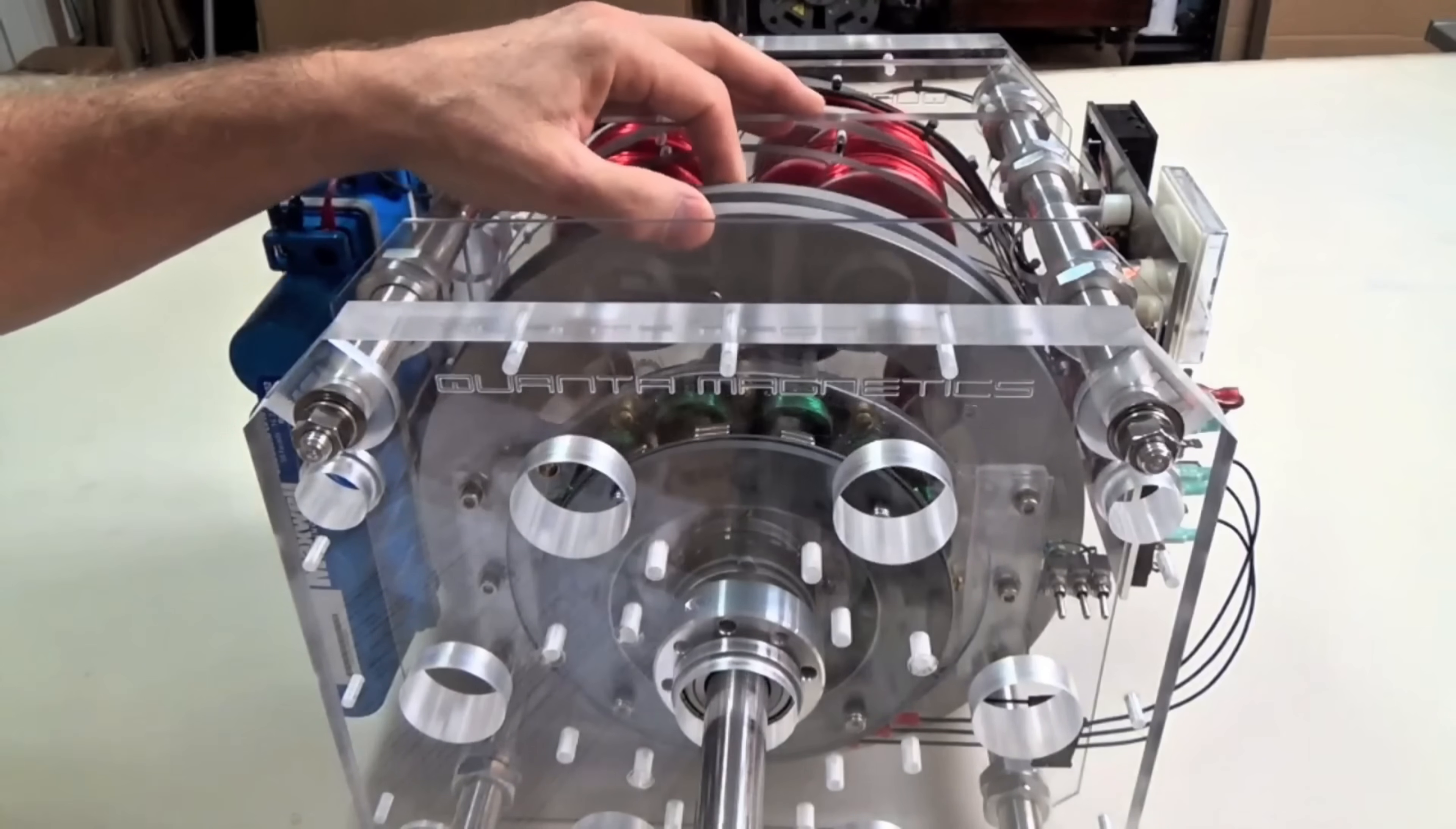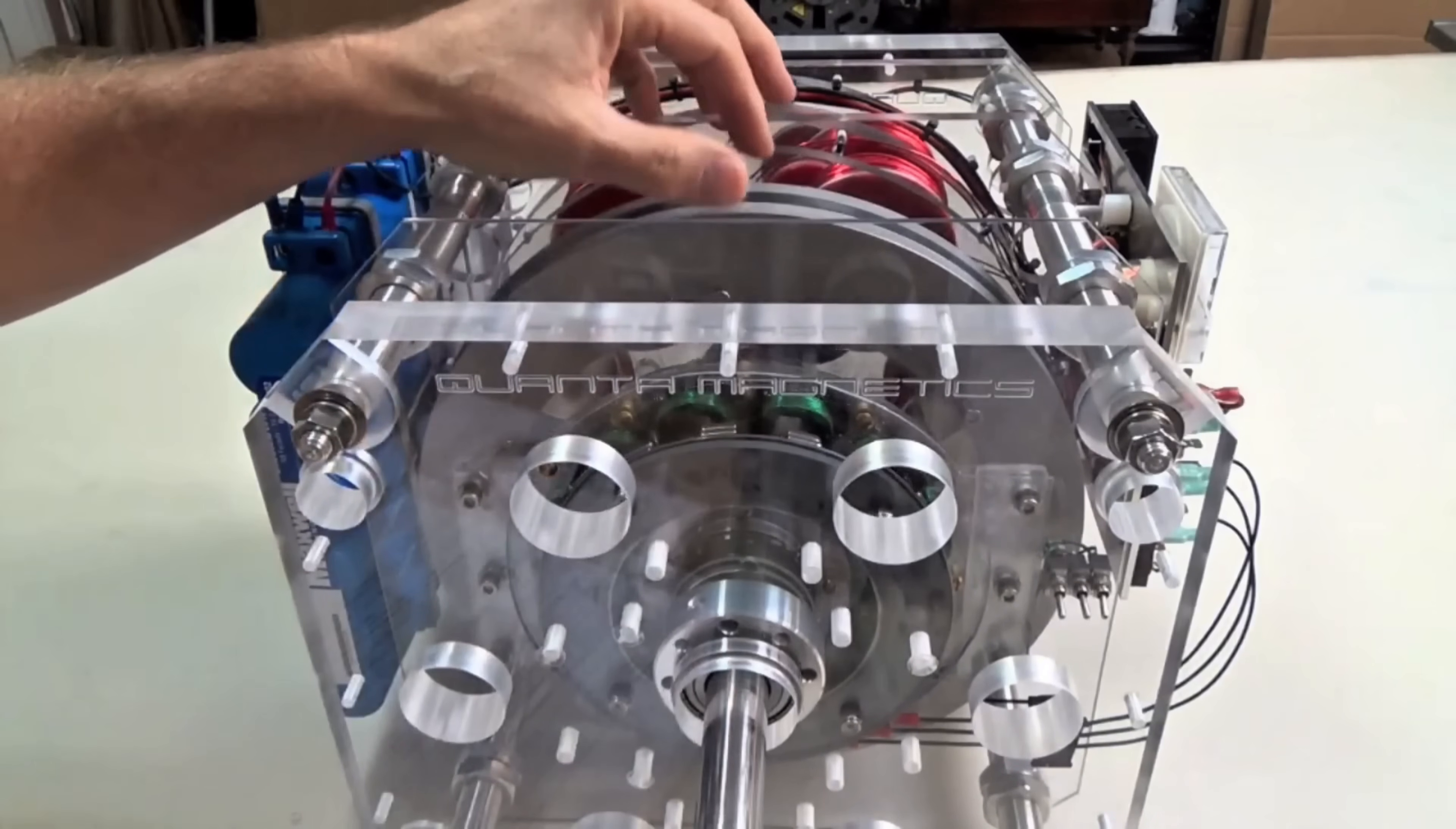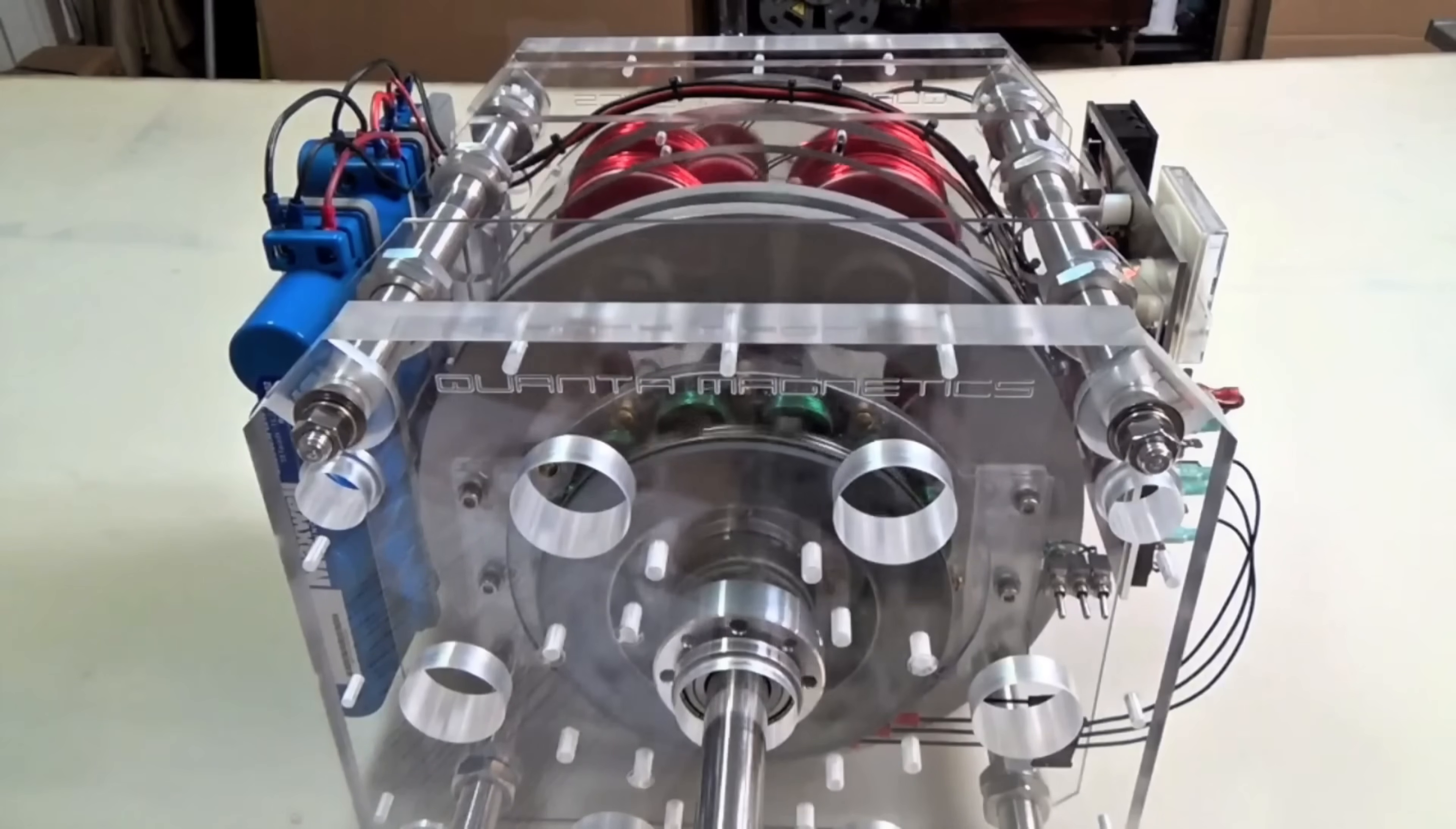This is the third big innovation. By driving multiple magnet rotors with one set of coils, the system nearly doubles, or more, its torque and output compared to a single rotor design. Essentially, it's like having three motors working in unison. More magnets mean more interaction with the coils, which means more mechanical force and more electricity generated on the alternator side.